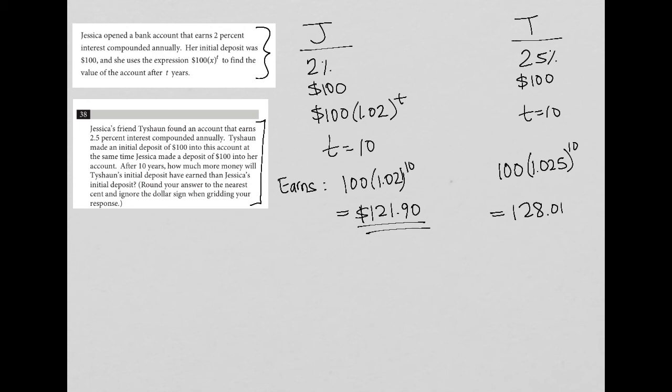I have 0.008. So see if you get those same values. So the question wants us to figure out how much more money. Well, Tyshawn made $128.01, whereas Jessica made $121.90. So I can just subtract those two things.